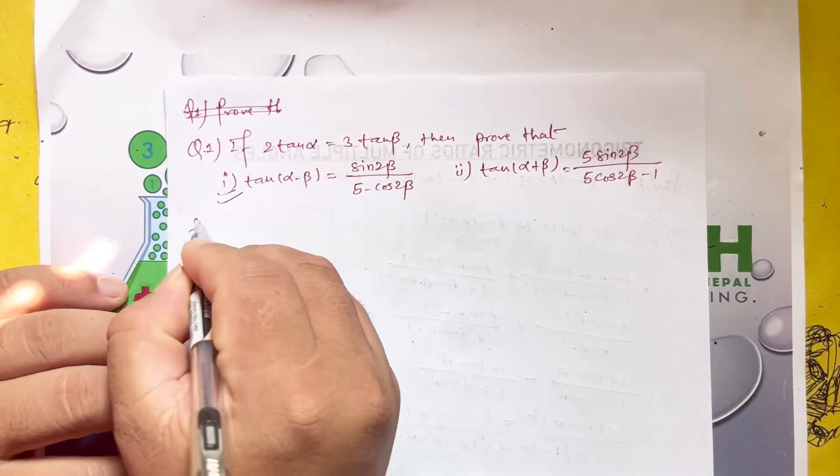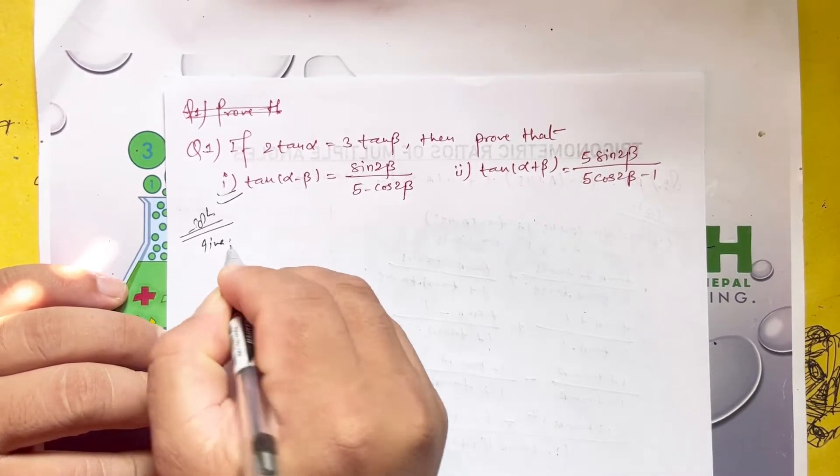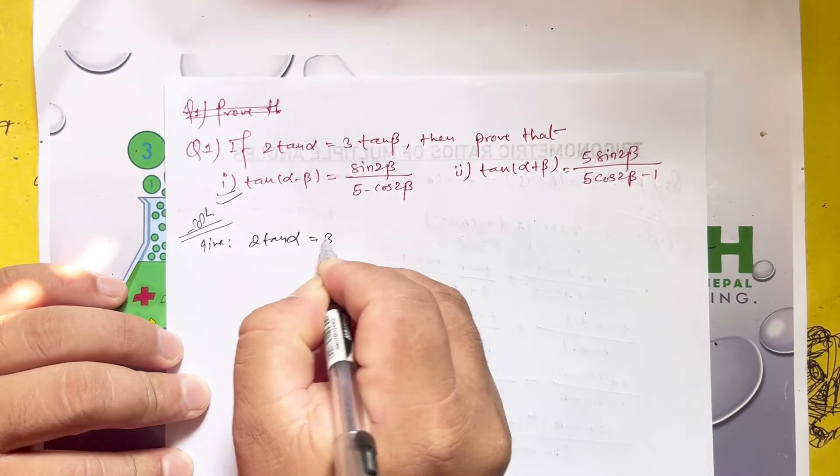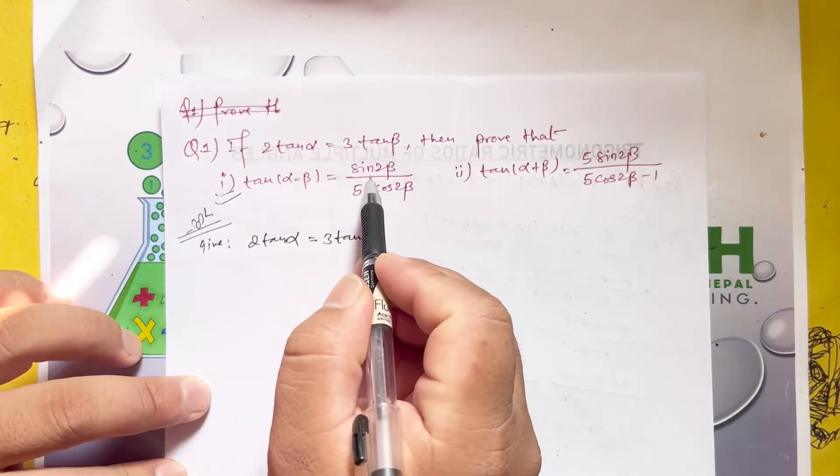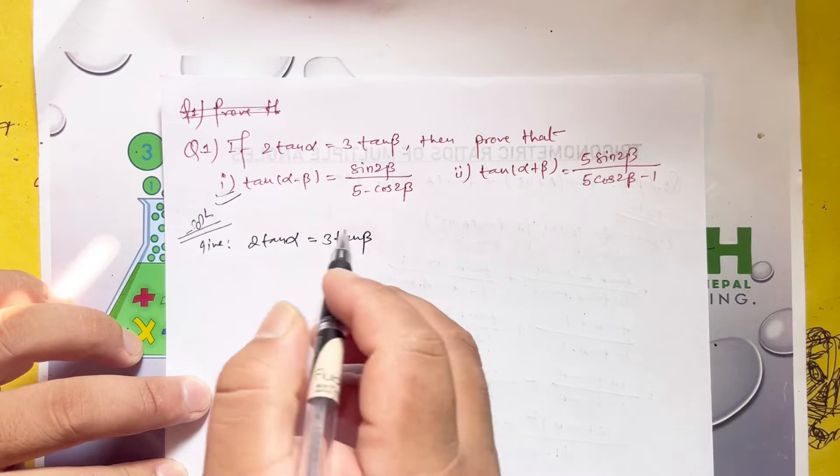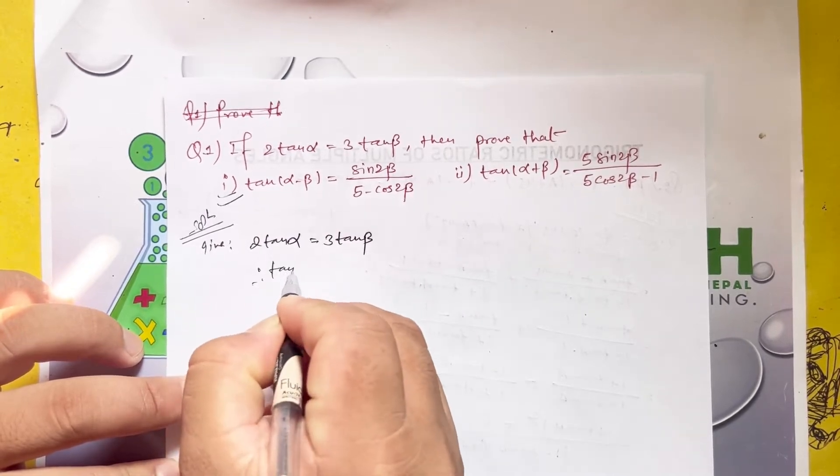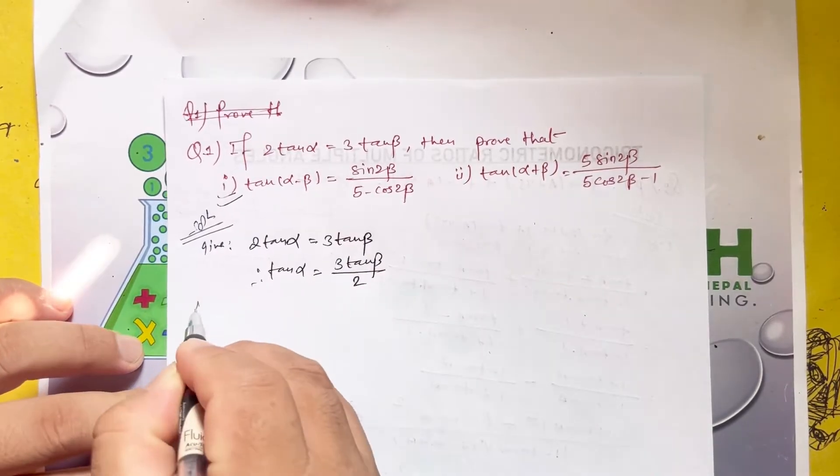The solution begins with the given condition: 2 tan alpha equals 3 tan beta. From this, we can express tan alpha equals 3 tan beta divided by 2.